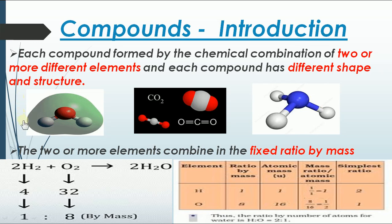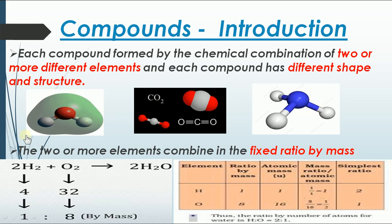Look at this picture — it indicates water. The oxygen is at the centre and hydrogen is attached on either side. You can see the inverted V shape, or bent shape. The shape is unique for water. Similarly, look at carbon dioxide: carbon is at the centre, oxygen on either sides — this is a linear structure.